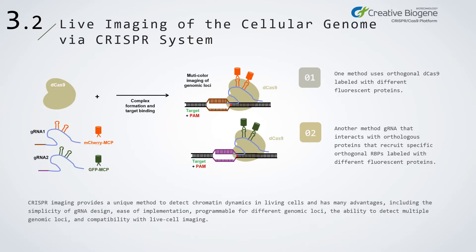CRISPR imaging provides a unique method to detect chromatin dynamics effects in living cells and has many advantages, including the simplicity of gRNA design, ease of implementation, programmability for different genomic loci, the ability to detect multiple genomic loci, and compatibility with live cell imaging.